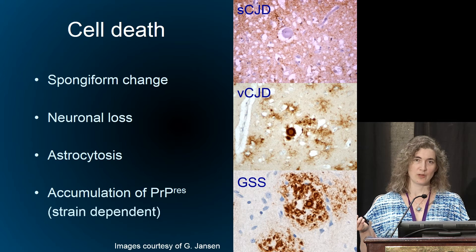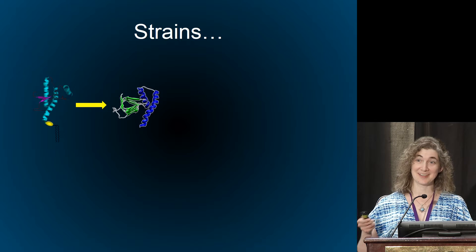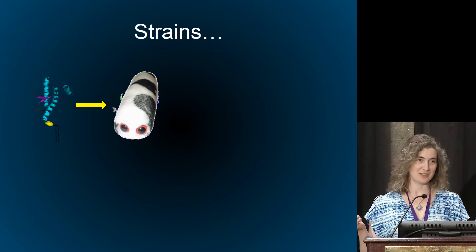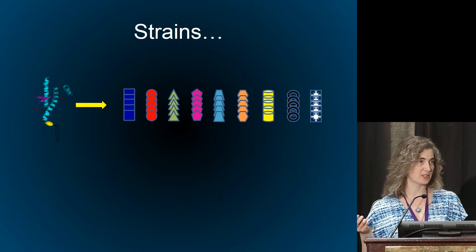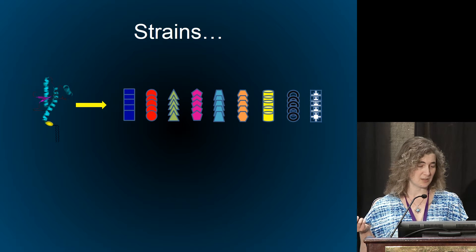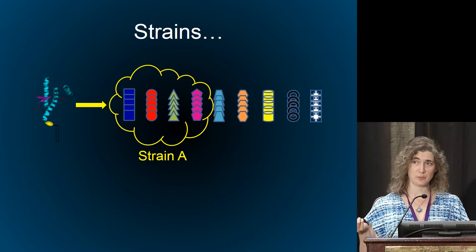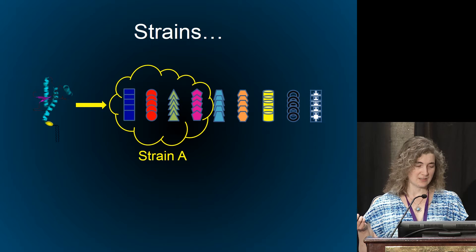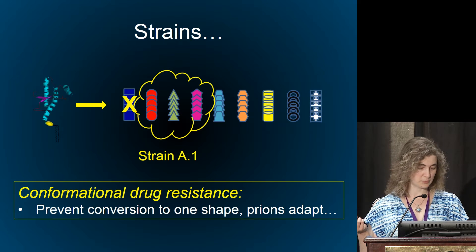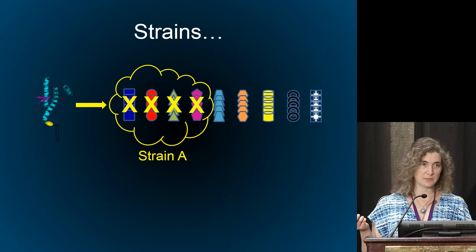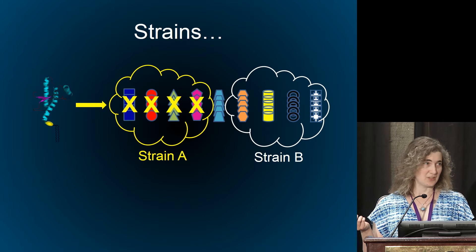What do I mean by strains? A protein can turn into many different shapes, and it's more complicated than just one shape per strain — it's really a cluster of shapes that constitutes one strain. This is the idea behind the cloud hypothesis proposed by John Collins. If you're trying to treat this and you have a drug that only targets one conformation, the strain shifts and you can't treat the disease — that's conformational drug resistance. Similarly, even if you block all conformations in one strain, that only covers one strain, so there's also strain selectivity as an issue.